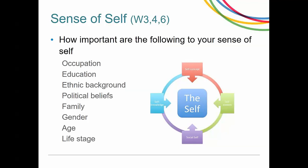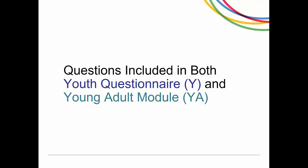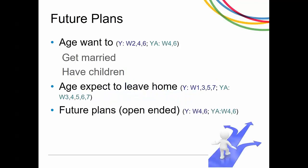This final section covers questions included in both the youth questionnaire and the young adult module. Next to each question I've indicated, using color coding, what waves those questions are asked — sometimes in similar patterns, sometimes differently across the two questionnaires. Both youth and young adults are asked about their future plans: the age they want to get married or have children, the age they expect to leave home, and what their future plans are as an open-ended question. For example, the young adults after Wave 3 are asked about leaving home at every wave, while youth are only asked in odd-numbered waves.